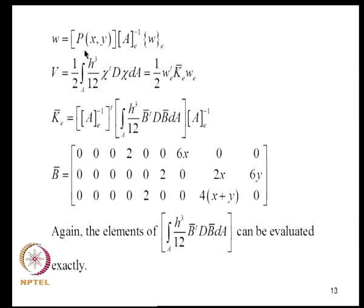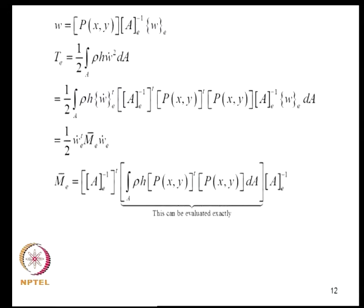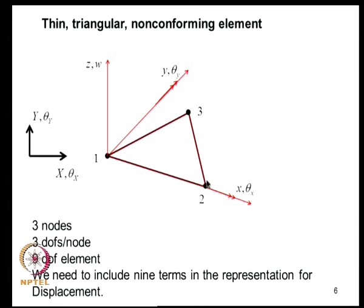For strain energy, starting from W = PAₑ⁻¹Wₑ, the strain energy is given by H³/12 · ∫ χᵀDχ dA. The element stiffness matrix K̄ₑ in local coordinates involves the strain matrix B̄, obtained by differentiating the shape functions through the partial derivatives defining the strain-displacement relations. These elements can be evaluated exactly. We have now analyzed this element in its local coordinate system; for assembly, it must be transformed to global coordinates.